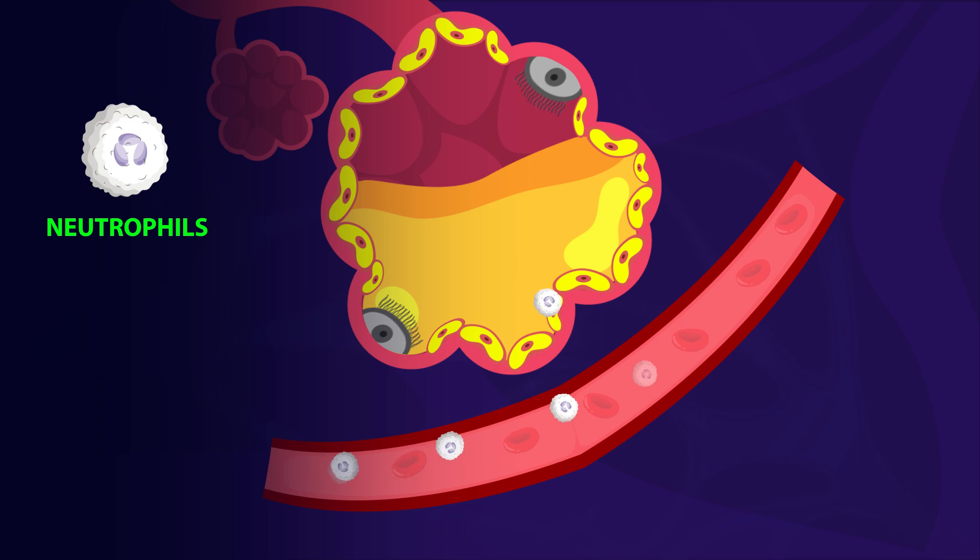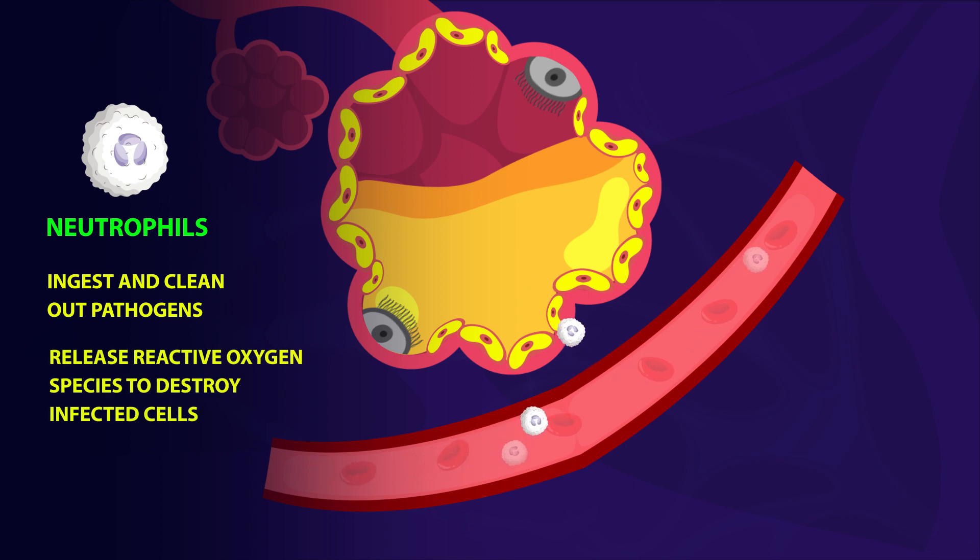Neutrophils are white blood cells whose main function is to kill and clean out the invading pathogens. They kill the virus by secreting proteases and reactive oxygen species, but it comes with a price, which is the damage of the tissue itself. The cycle will repeat, leading to more inflammation and more fluid accumulation.